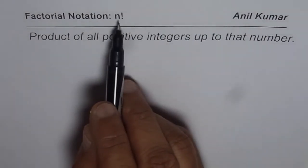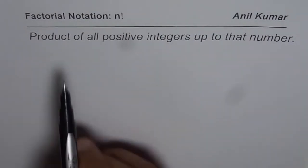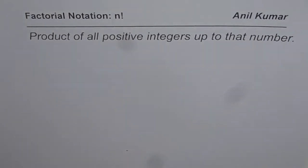Now when we say n factorial, what does it mean? The definition is right there. Product of all positive integers up to that number. That is what factorial really means. So it is a short form of writing product of consecutive numbers.